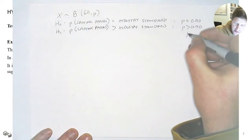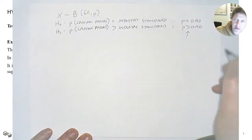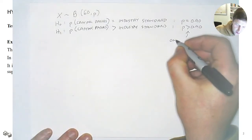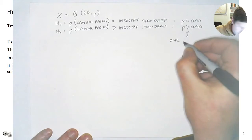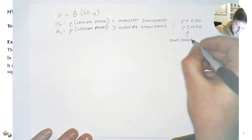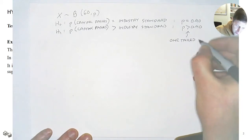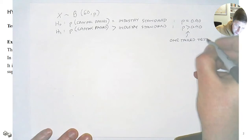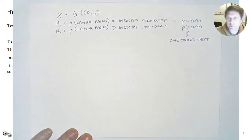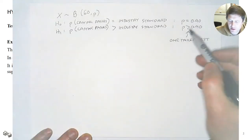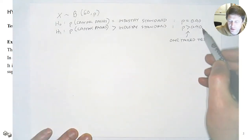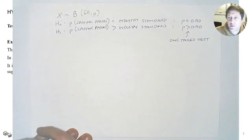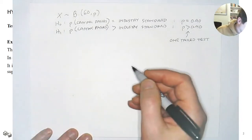This is going to lead to a one-tailed test, because we're only interested in the event that the probability is greater than the industry standard — that's called a one-tailed test.